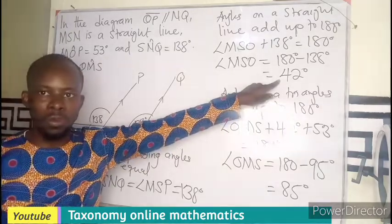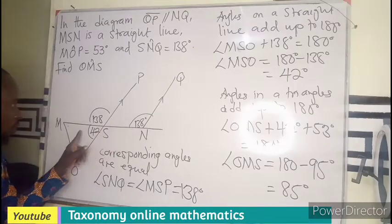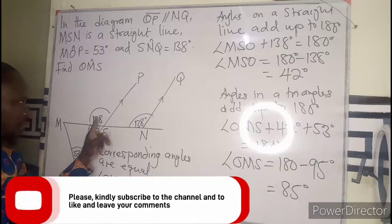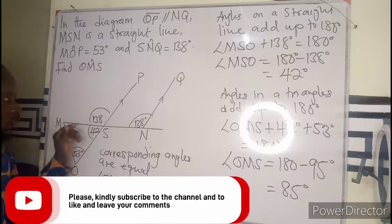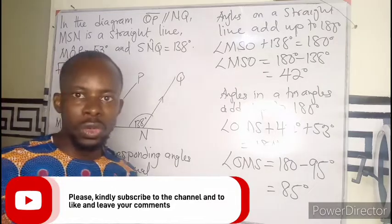So it means this very angle is 42. It is also equal to this because of vertically opposite angles. Vertically opposite angles are equal, so you will still get the angle 42 and you follow through this suit.